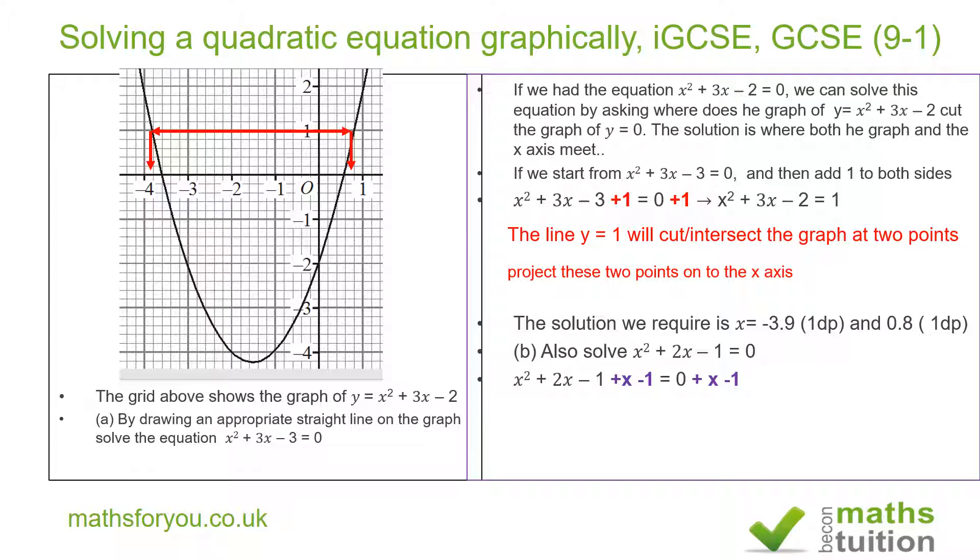And because this is an equation, we want to do the same to the right hand side as well. Hence x minus 1 there. If we then draw the graph of x minus 1, we've got this there. And as before, we then project where the graph of x squared plus 3x minus 2, we then project these onto the x axis. And we end up that x can have the values 0.4 and also minus 2.4.